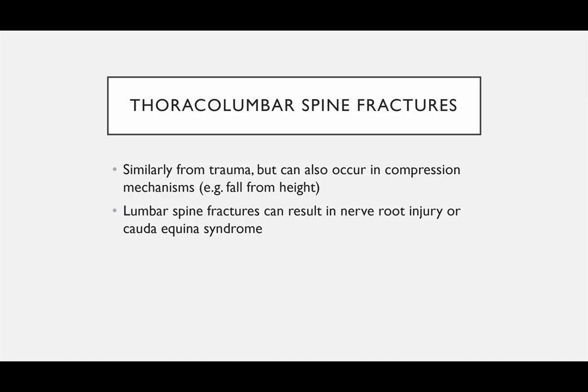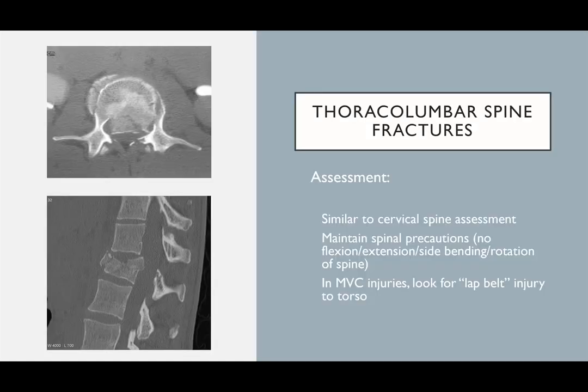Lumbar spine fractures can result in nerve root injury or cauda equina syndrome, as we talked about in the first part of this lecture. On axial imaging you can see fragmentation, and compared to the typical space for the spinal canal, there can be a huge fragment extruded in — where the cauda equina is supposed to be sitting. So this could be a serious problem, as also seen on the sagittal image.